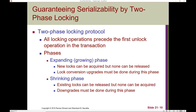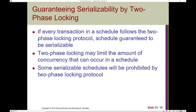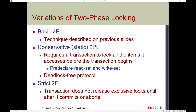We can guarantee serializability using two-phase locking. The two-phase locking protocol ensures that all locking operations precede the first unlock operation in the transaction. There are two phases: the expanding phase, where new locks can be acquired but none released — lock upgrades must occur here; and the shrinking phase, where existing locks can be released but none acquired — lock downgrades must occur here. If every transaction follows two-phase locking, the schedule is guaranteed to be serializable.